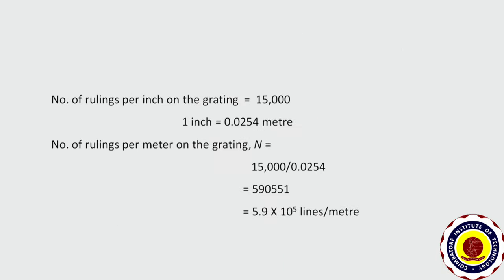The number of lines per inch in the grating is given on the grating itself — it is 15,000 lines per inch. We know 1 inch is equal to 0.0254 meter. So we can calculate the number of lines per meter: 15,000 divided by 0.0254, which will be equal to 5.9 × 10⁵ lines per meter.